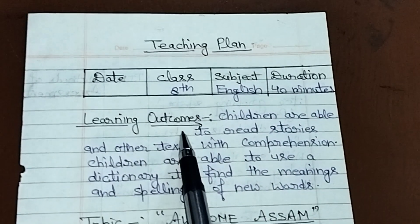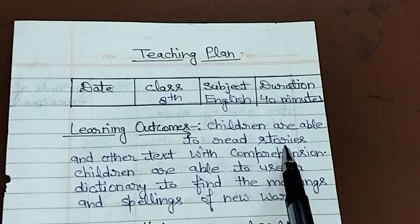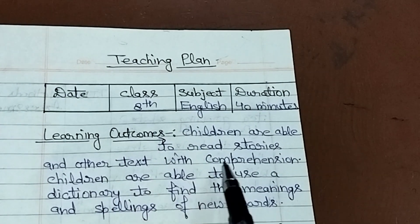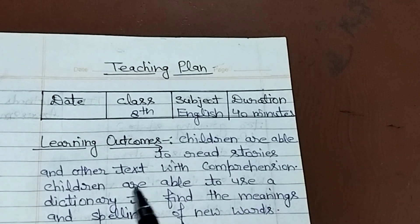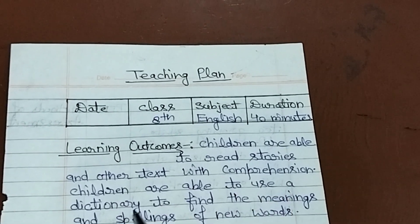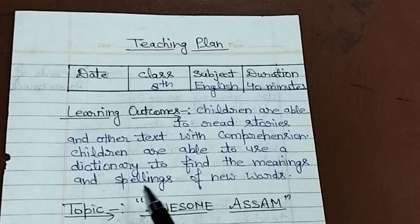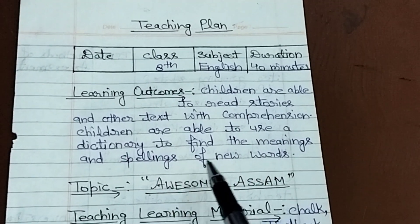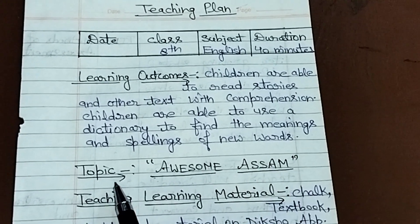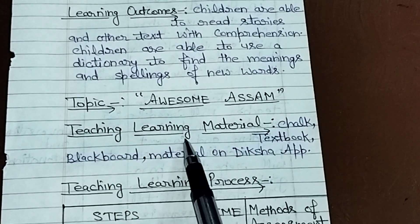Learning Outcomes: Children are able to read stories and other texts with comprehension. Children are able to use a dictionary to find the meanings and spellings of new words. Topic: Awesome Assam.